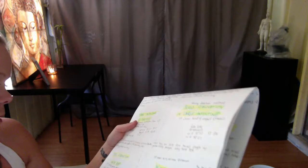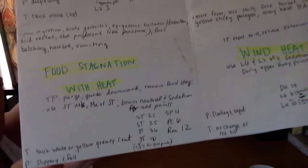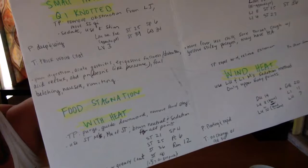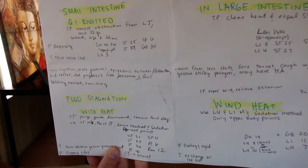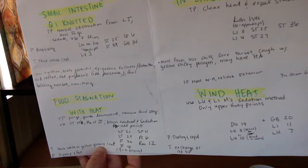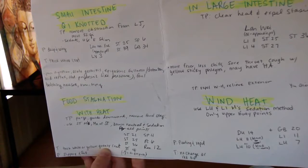Another gastrointestinal disorder: food stagnation with heat. Characterized by poor digestion, acute gastritis, epigastric fullness and distension, acid reflux, abdominal pain which doesn't like pressure, foul belching, nausea and vomiting.